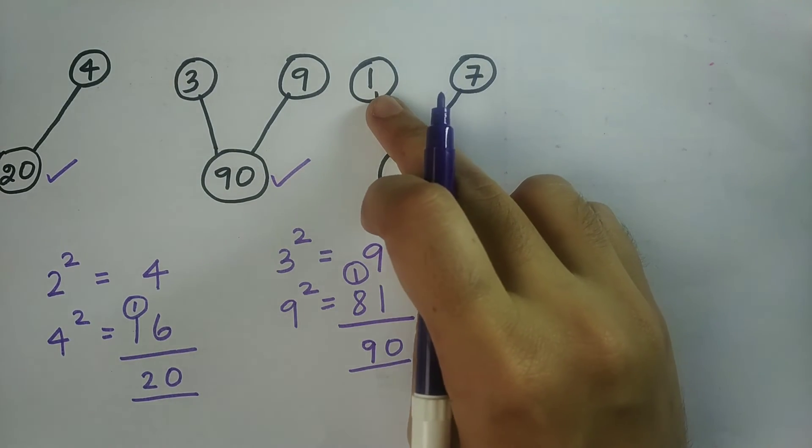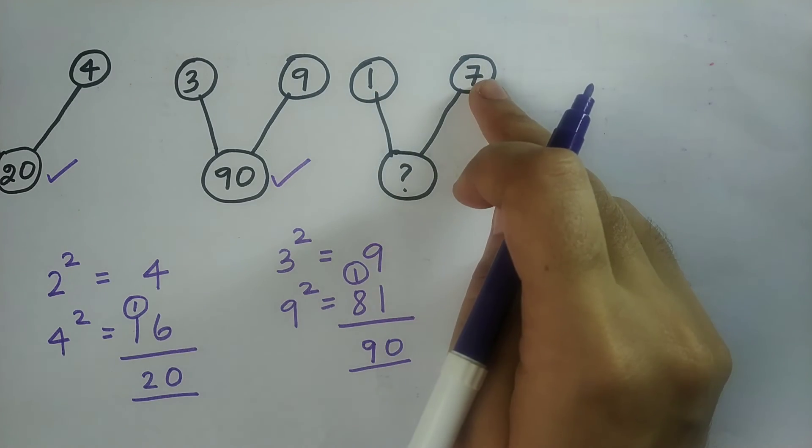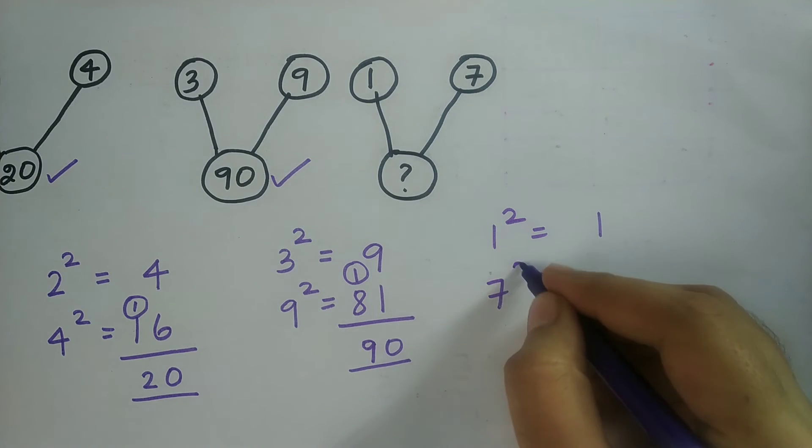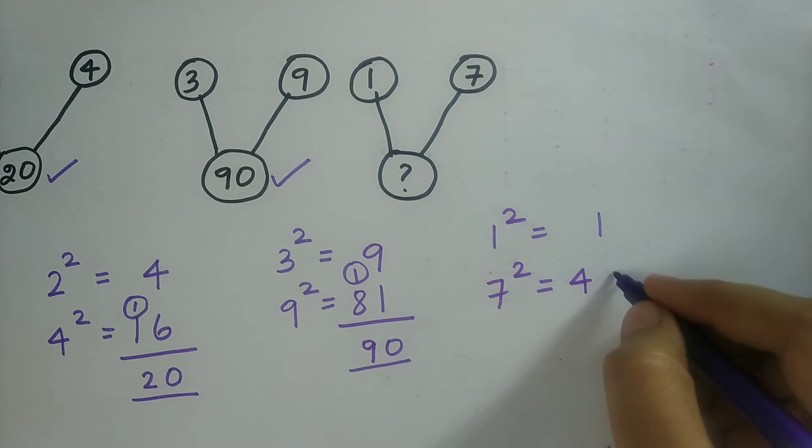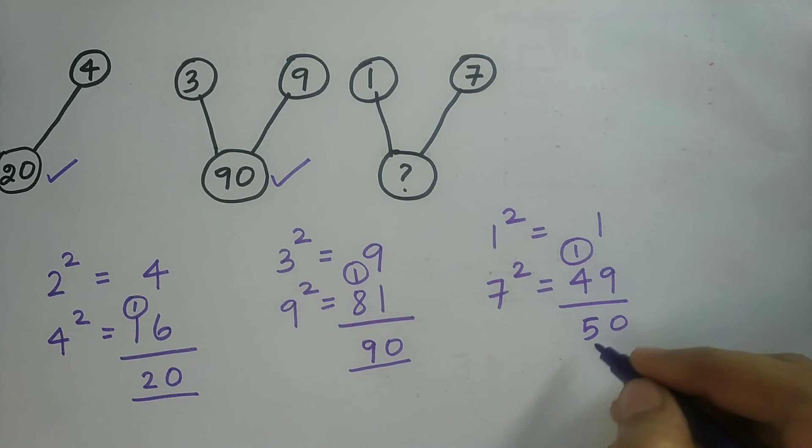For the third figure, the two numbers on top is 1 and 7. So I should square them and write. So 1 square is equal to 1. And then 7 square is equal to 49.